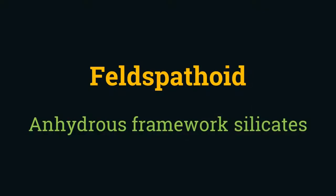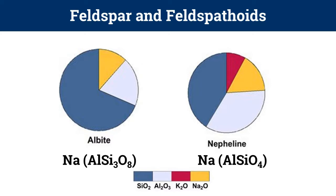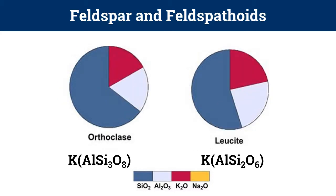The chief chemical difference between feldspars and feldspathoids lies in the silica content. If free silica is present in the magma, feldspathoids would combine with alkali to form feldspar. Feldspathoids like nepheline hence have less silica content than feldspars such as albite, and this is evident in these diagrams as well as in the formula. This is true for all feldspathoids — when the silica content is low, the same cations combine in low silica to form leucite instead of orthoclase.